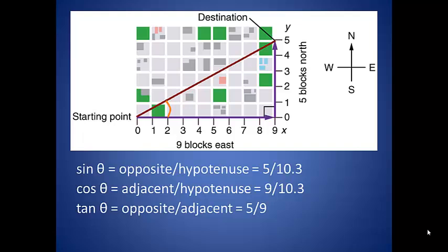We can use any of the three trigonometric functions to find the magnitude of our angle. In this case, our displacement ends up being 29.1 degrees north of east.